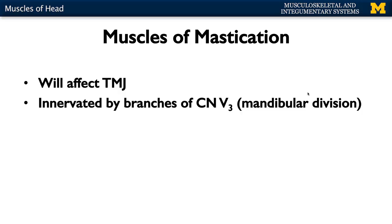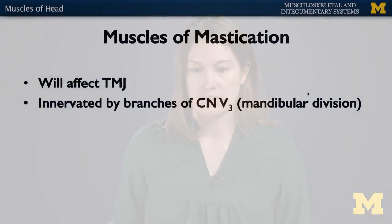The big muscles of the head are the muscles of mastication. There are four muscles of mastication, and they're all going to affect your TMJ — your temporomandibular joint — allowing you to open and close your mouth and protrude and retrude your chin. All of these muscles are going to be innervated by the only efferent branch of your trigeminal nerve, the third division — the mandibular division.